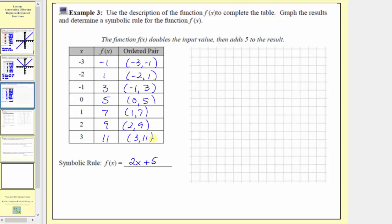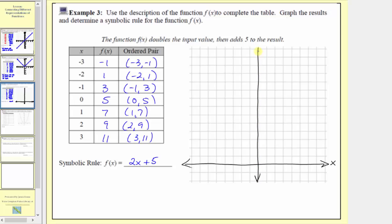Now for the next step, we'll plot the points given by the ordered pairs in order to graph the function, where we always find the inputs along the horizontal axis and the outputs along the vertical axis. The least input is negative three, the greatest is positive three. The least output is negative one and the greatest is positive eleven. Because the smallest output is negative one, let's sketch the horizontal axis lower than we normally do, since we won't need much of the negative vertical axis.